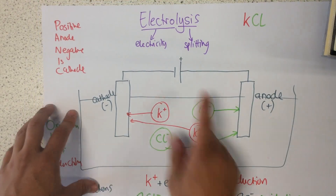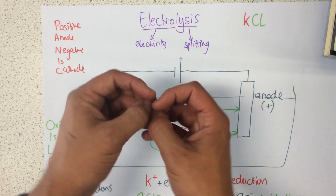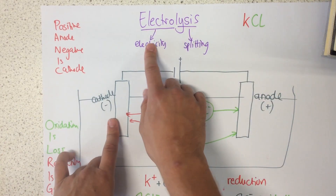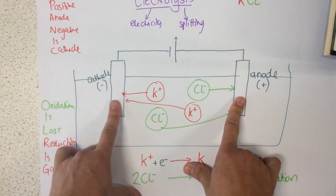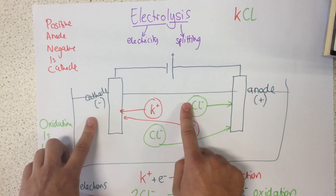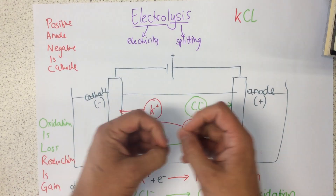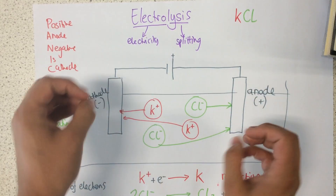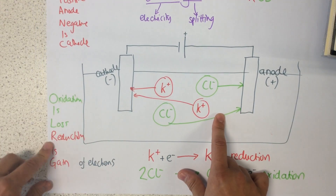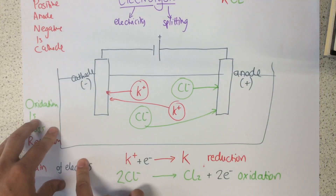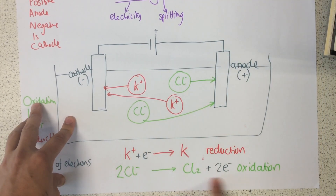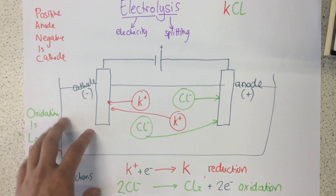To recap: electrolysis means splitting a compound using electricity. We have a positive anode and a negative cathode. Our sample needs to be melted in order to be separated. Oxidation is loss and reduction is gain of electrons, and here are a couple of examples of half equations. Thank you.